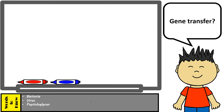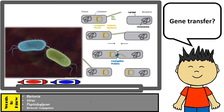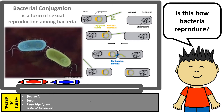Bacteria can actually transfer genes through a process known as bacterial conjugation, in which a bridge is created between two bacteria — they refer to this bridge as a sex pilus. Genes are then transferred in a circular form known as plasmids from one bacteria to the other. This is considered sexual reproduction because bacteria are exchanging genes to create a recombinant bacterial cell that has new traits.